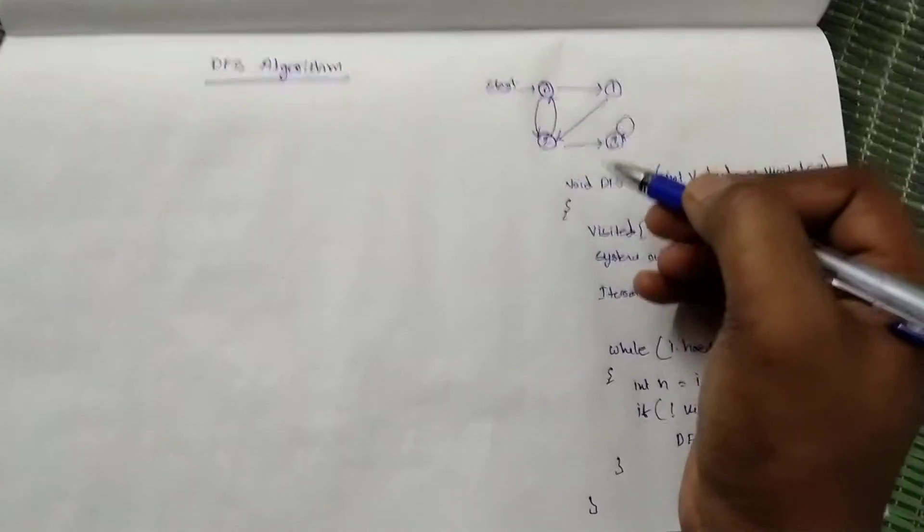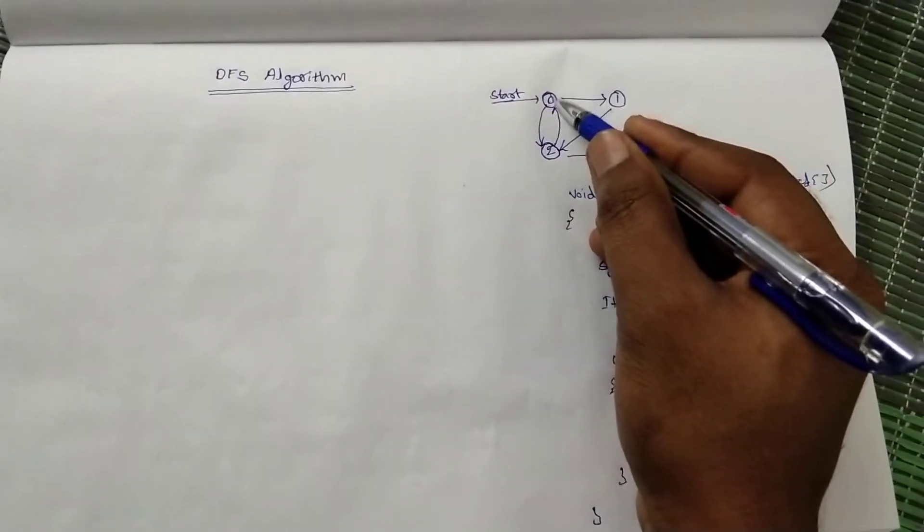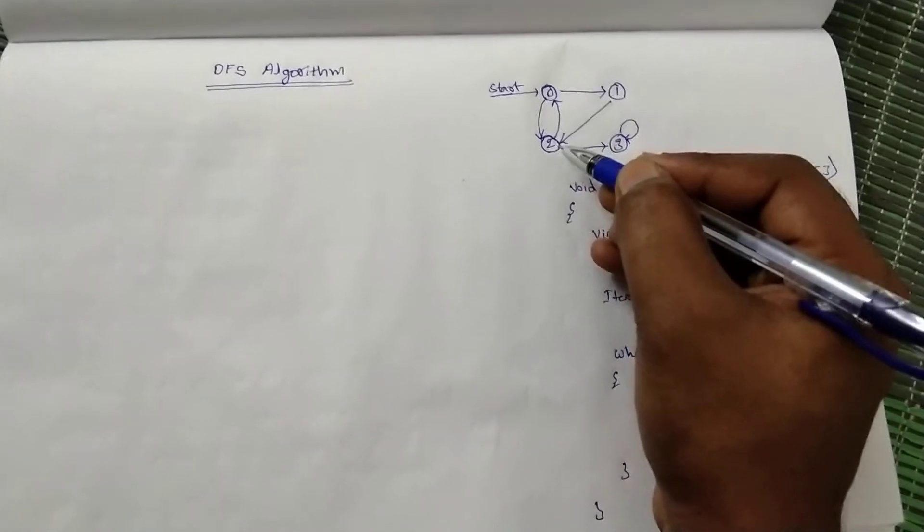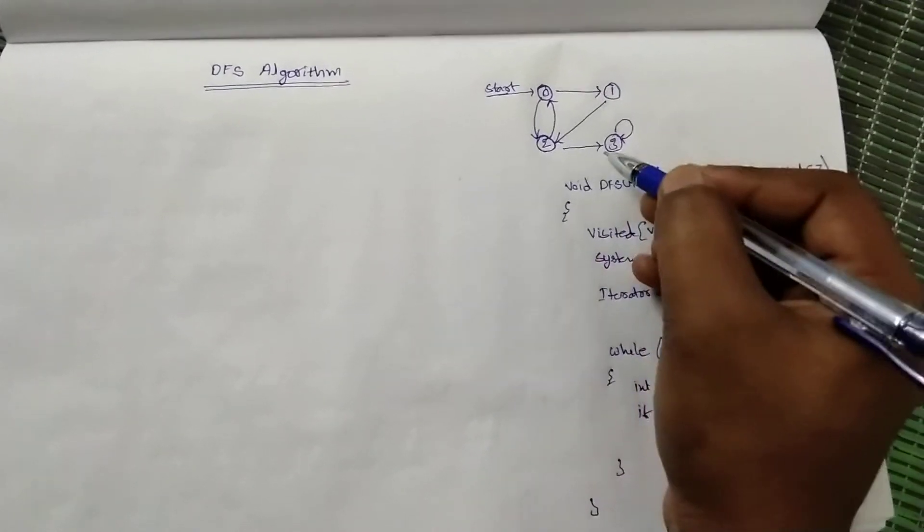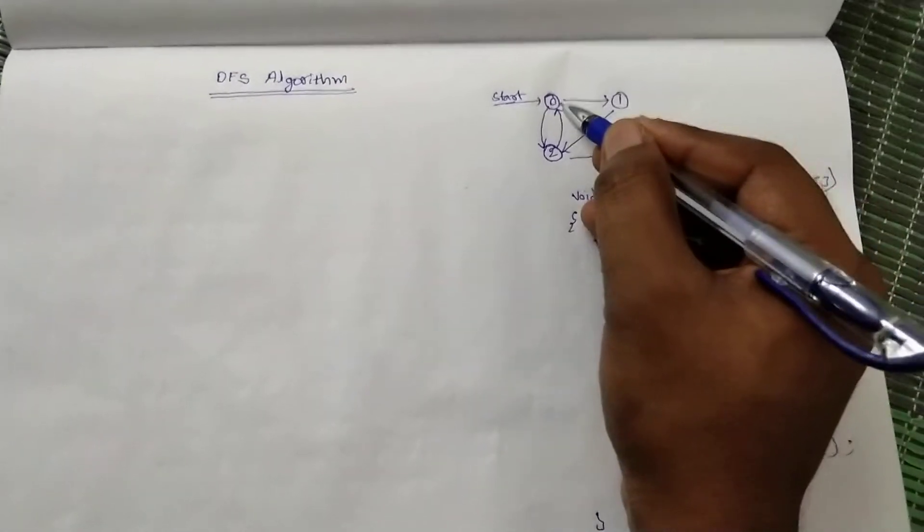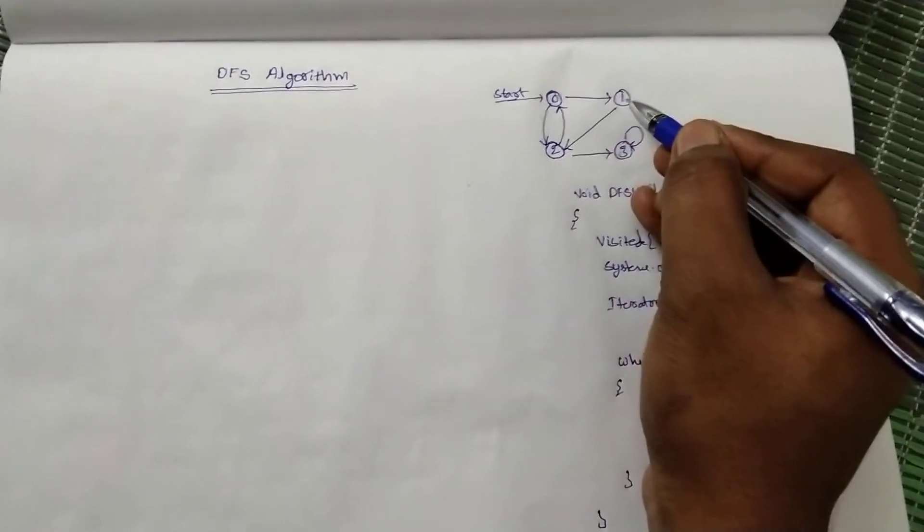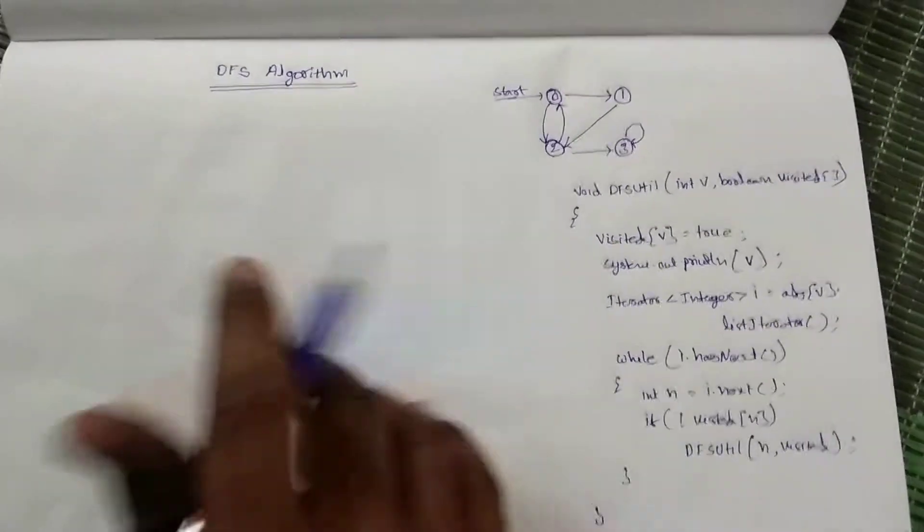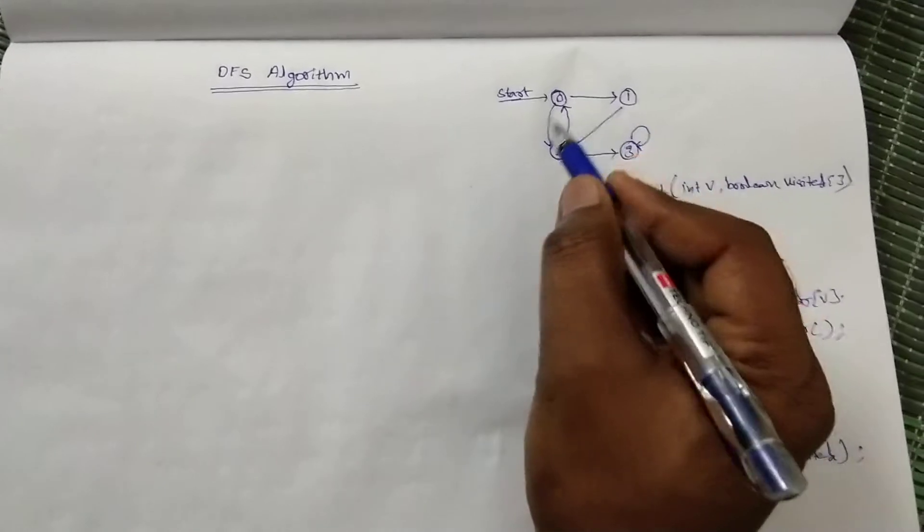But in depth-first search it will explore only one node, and in this node it will explore its adjacent node, then it will go deep, then it will come to the second node of this root node. In this algorithm, we will first need to convert this graph into an adjacency list.